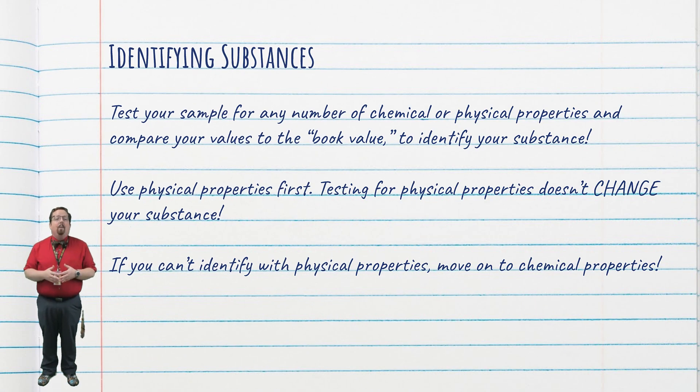So, short story, if you want to identify an unknown substance, take a bunch of measurements on it. Find its values for various physical or chemical properties, and then go compare them to the various book values until you find a substance that matches those properties. Since testing for physical properties won't destroy your sample, it might be best to determine the physical properties first, and then move on to chemical properties only if you need to.